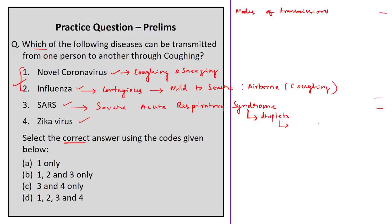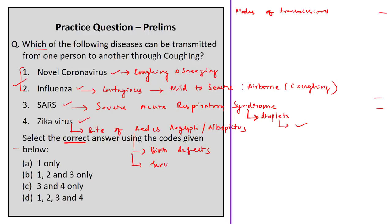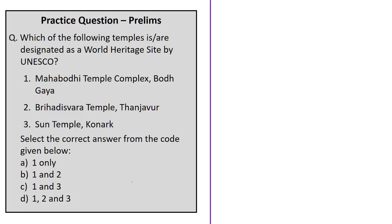Zika virus is spread mostly by the bite of an infected Aedes species mosquito — Aedes aegypti and Aedes albopictus — which bite during the day and night. Zika can also be passed from a pregnant woman to her fetus, causing certain birth defects, and can be transmitted through sexual intercourse, but not through coughing. Therefore the correct answer is option B: 1, 2, and 3 only — novel coronavirus, influenza, and SARS.